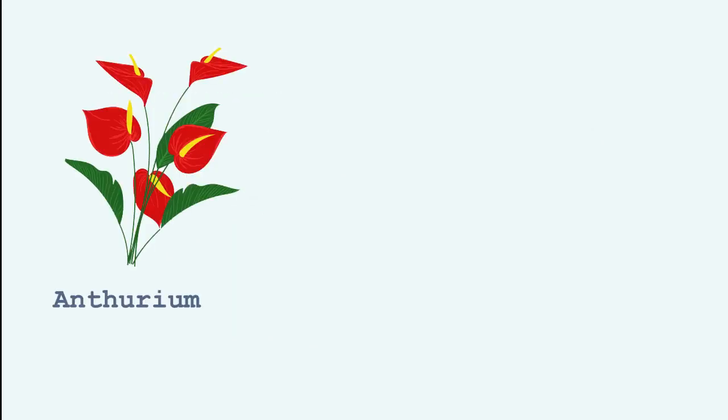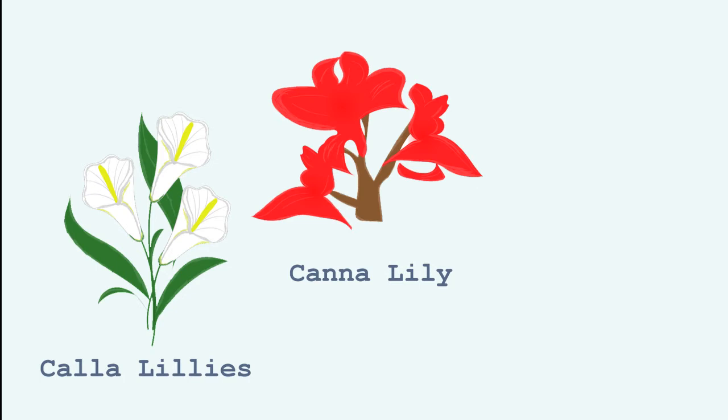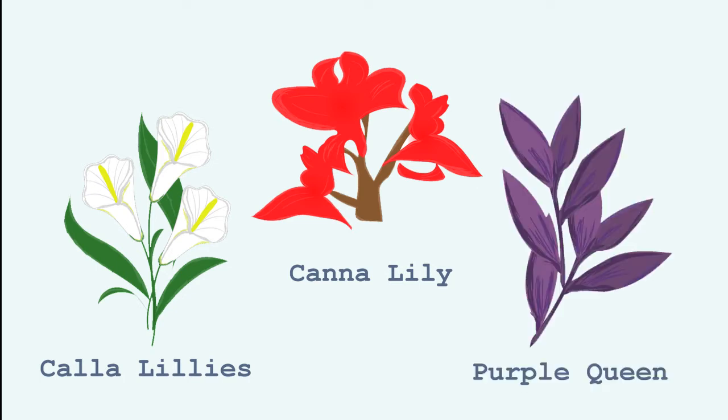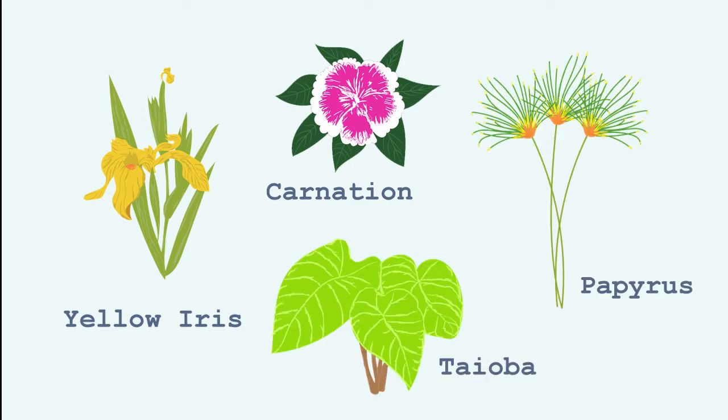Plants that live well in humidity such as anthurium, purslane, crown of thorns, calla lilies, canna lily, purple queen, yellow iris, carnation, papyrus, tioba, among others.